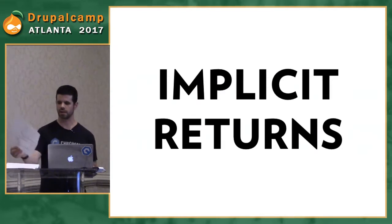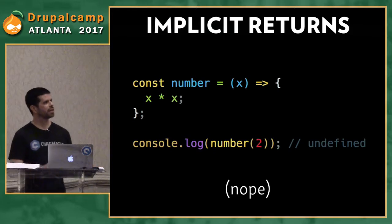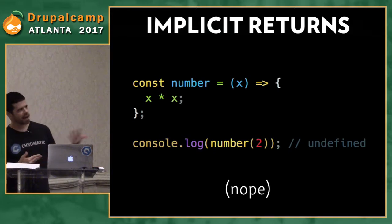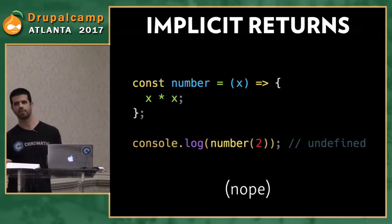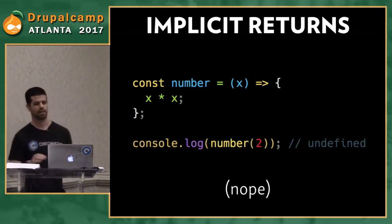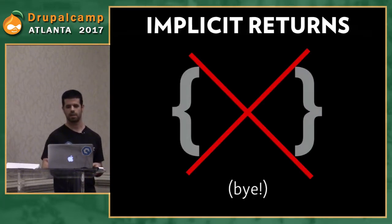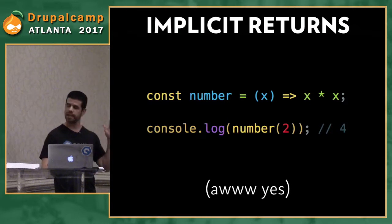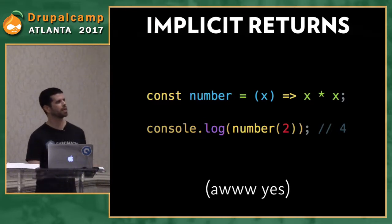Let's talk about implicit returns. With an arrow function, if you have a function that multiplies a value by itself and you log it, you'll get undefined because you're not returning anything. Implicit returns are super straightforward: just remove the curly brackets from the function body. Same exact function, but without the scoped curly brackets, you get an automatic return — a neat shorthand for cleaner code.